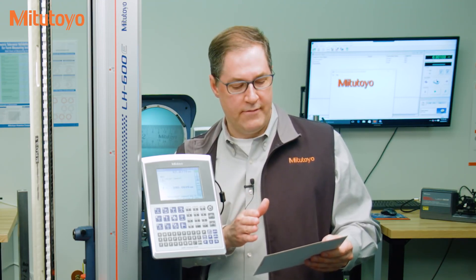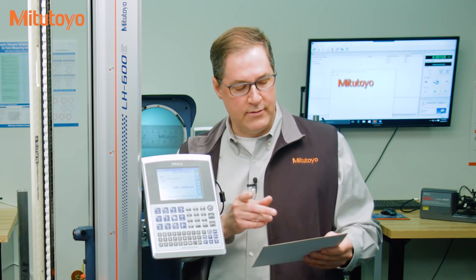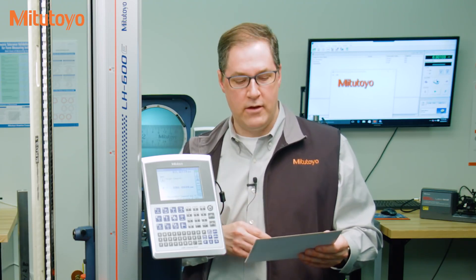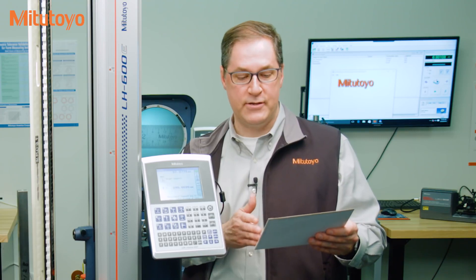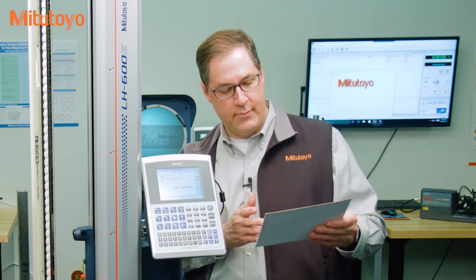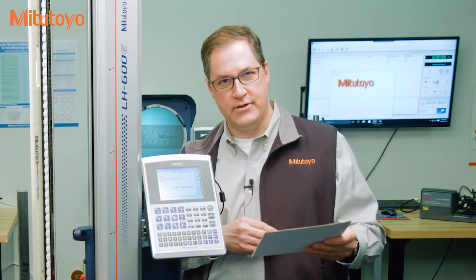It's an operation that, under specified conditions, in a first step, establishes a relation between the quantity values with measurement uncertainties provided by measurement standards and corresponding indications with associated measurement uncertainties, and, in a second step, uses this information to establish a relation for obtaining a measurement result from an indication.